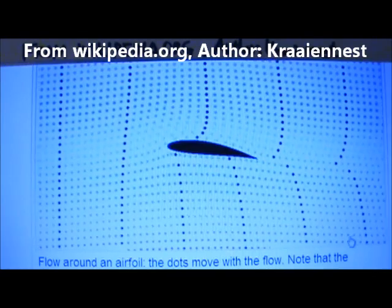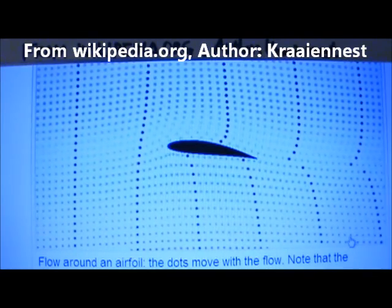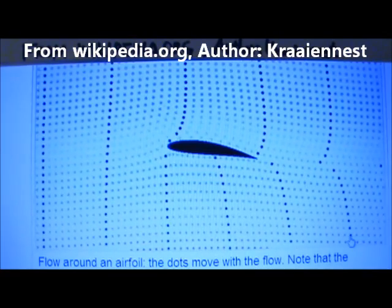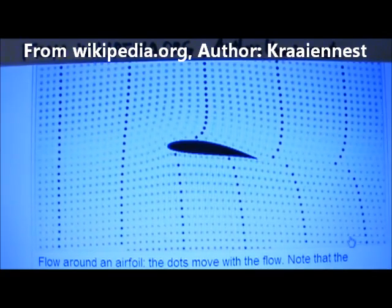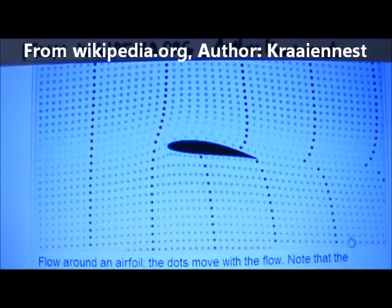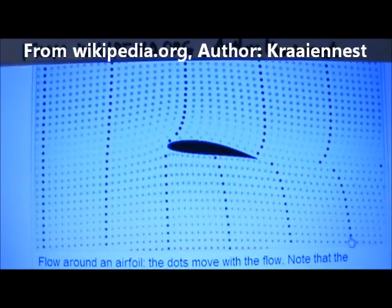This animation shows air flow around an airfoil. The dots move with the flow. As you can see, the dots just above the wing spread out more because they move faster. The dots just below the wing are closer together because they move more slowly.